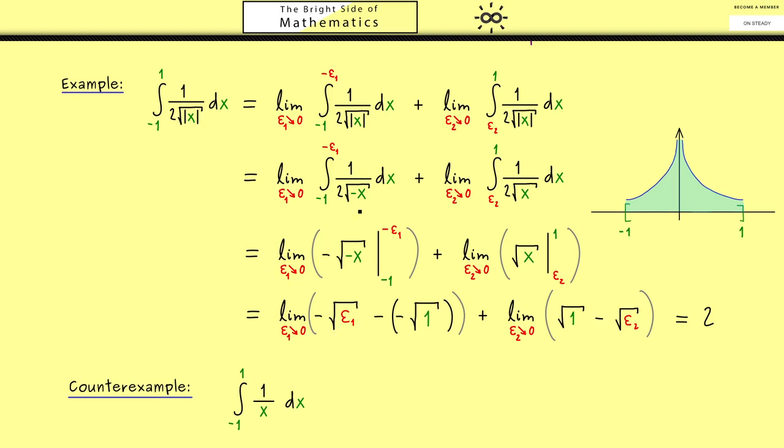So you see this here looks similarly to before because we have an integral from minus 1 to 1, but it turns out that this limit and this limit will not exist.